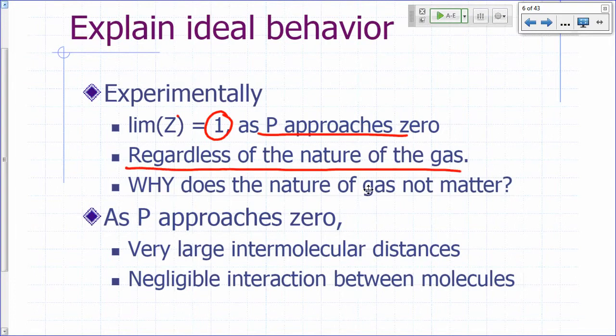And this is true regardless of what your gas is. Why doesn't the nature of the gas matter at very low pressure? In other words, why is PV equals NRT applicable regardless of what the structure of your gas is? It doesn't seem to matter what kinds of atoms make up the molecules in your gas. The reason for that is at very low pressure, what do we know from the ideal gas law? At very low pressures, your molecules are very, very far apart.